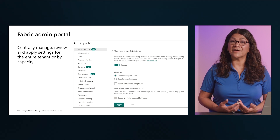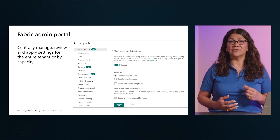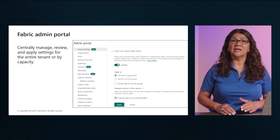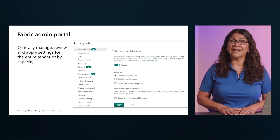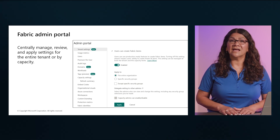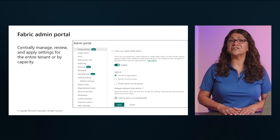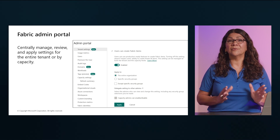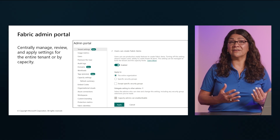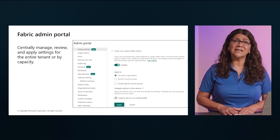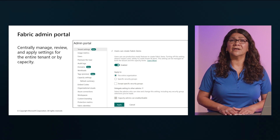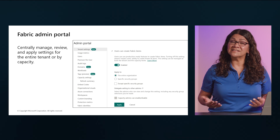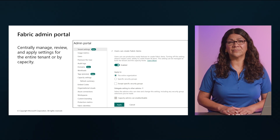There's one setting worth calling out that may change how you and your users experience Fabric. The Fabric on/off switch, located in tenant settings, lets organizations using Power BI opt into Fabric if they'd like. Here you can enable Fabric for your tenant and allow capacity admins to manage Fabric.